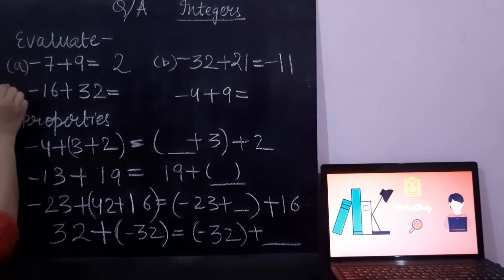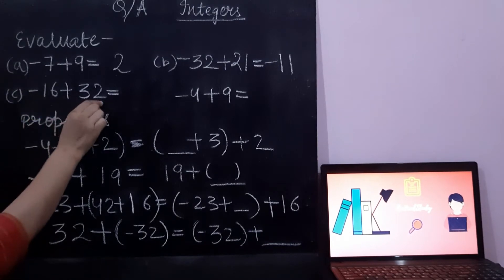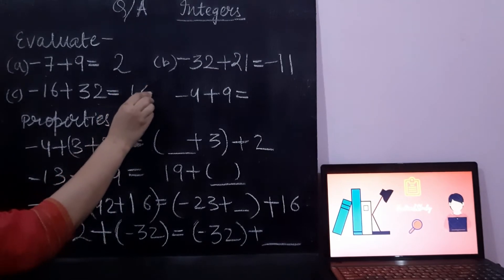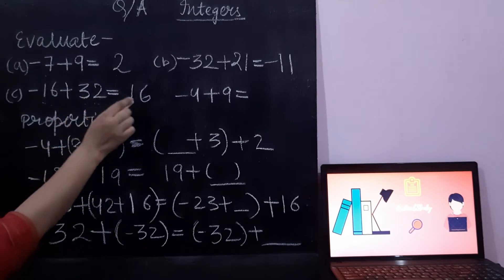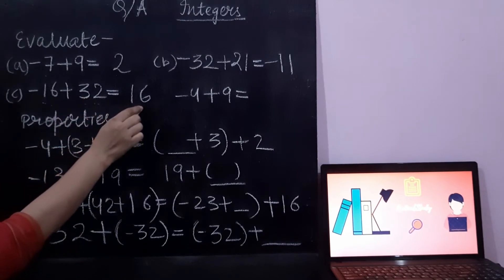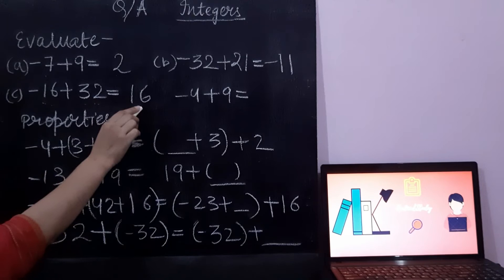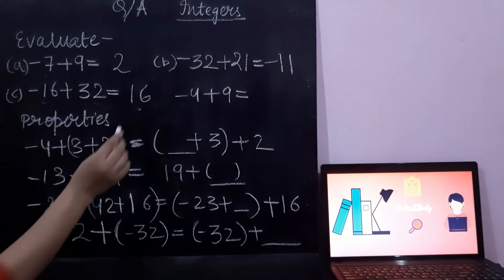Now option number C: minus 16 plus 32. The answer is 16. Why is it 16? Because 32 is greater than 16, so we are using a positive sign. As I told you earlier, when there is no sign before the number, we consider it as a positive sign.